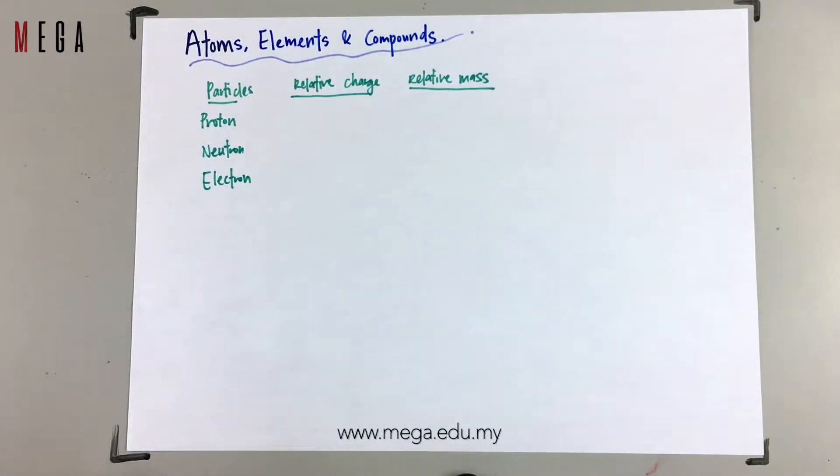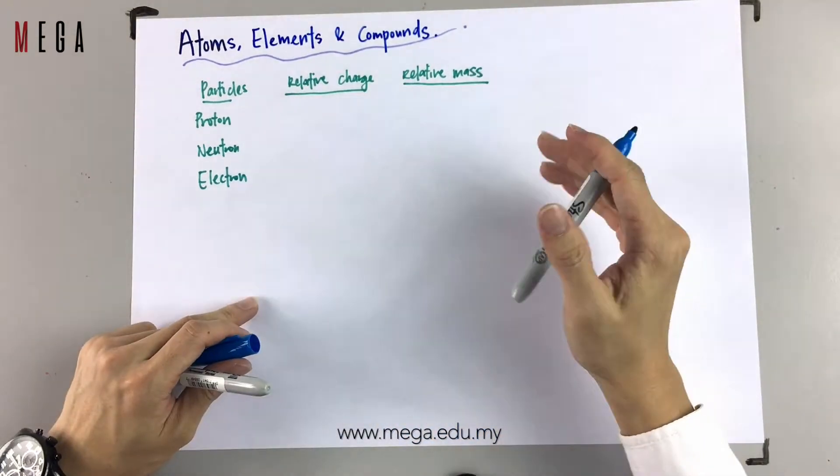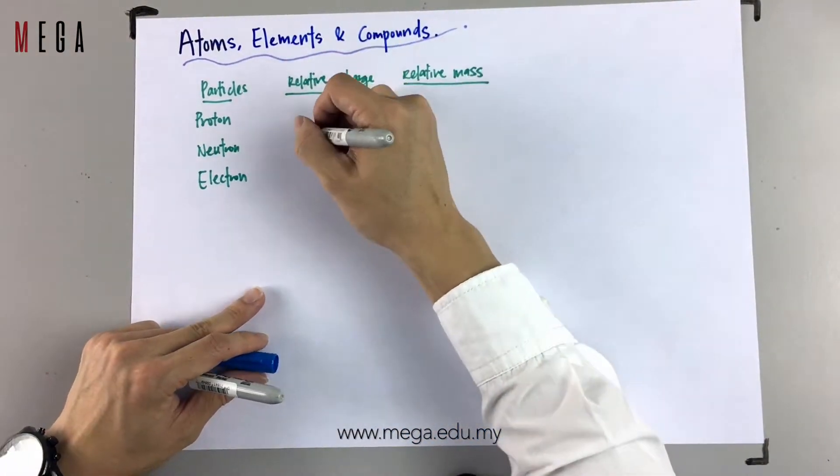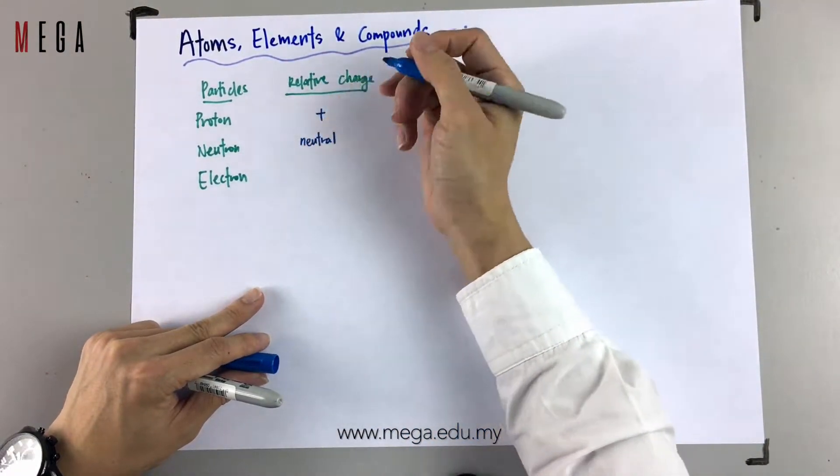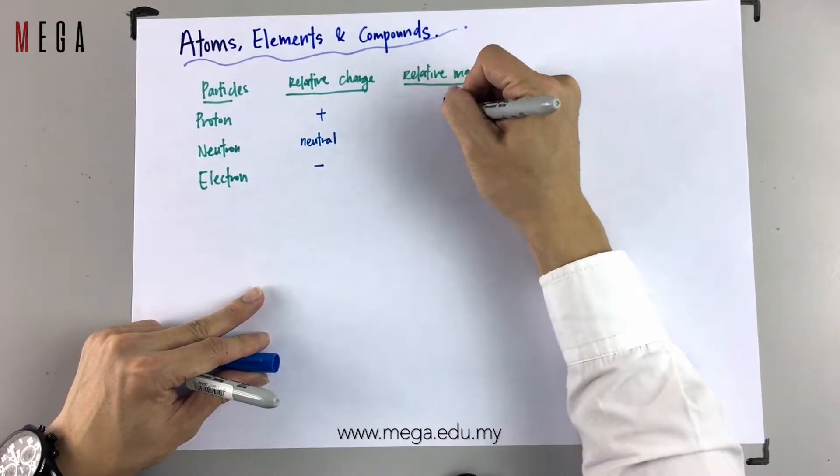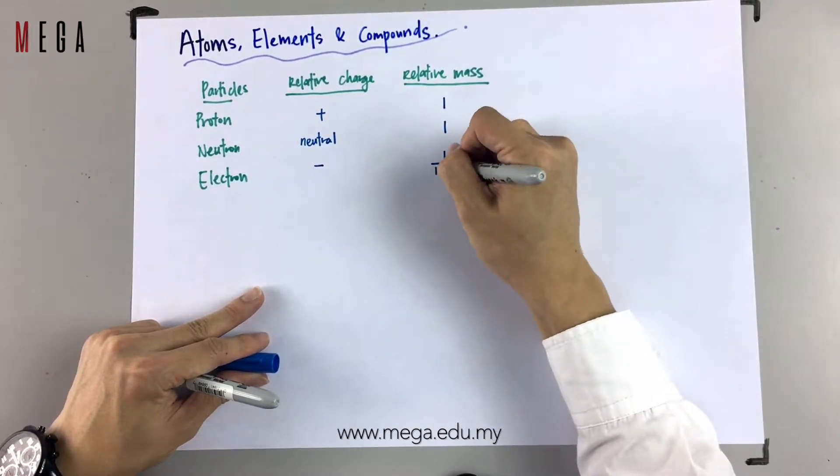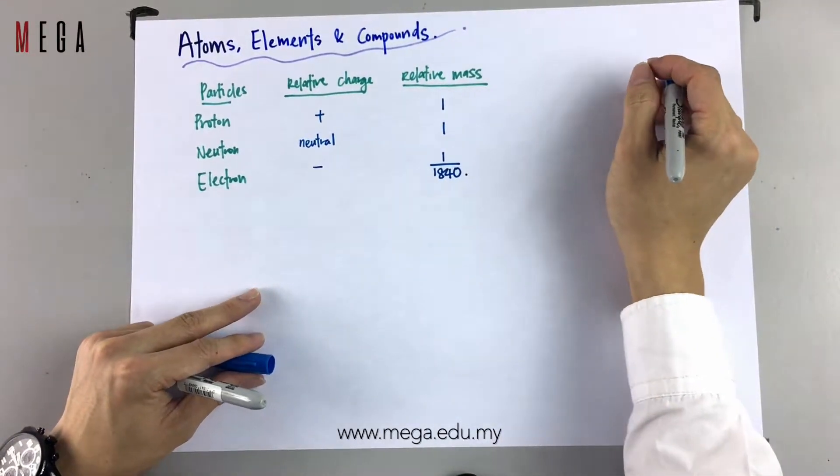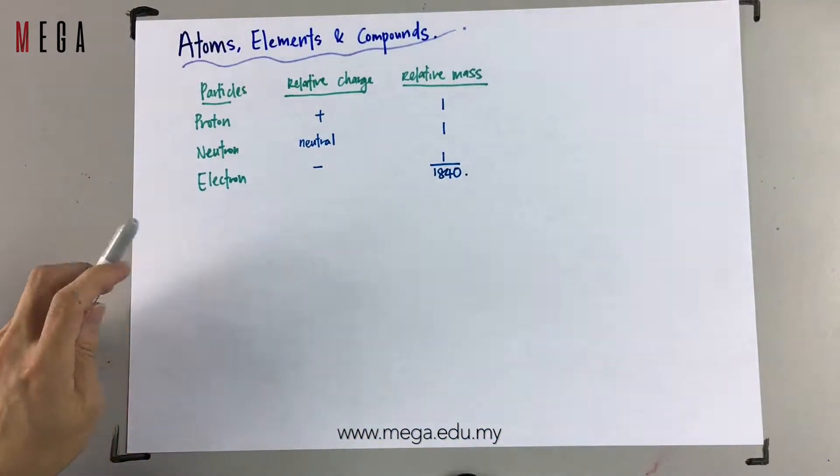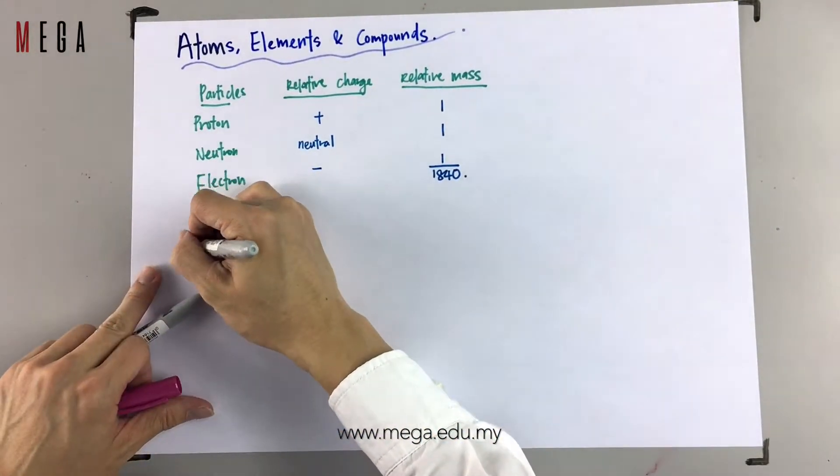In terms of relative mass, the mass for proton and neutron are the same, which is 1, whereas for electron it is relatively small, which is 1 over 1840. It is not zero because it does contain mass; it is very small.